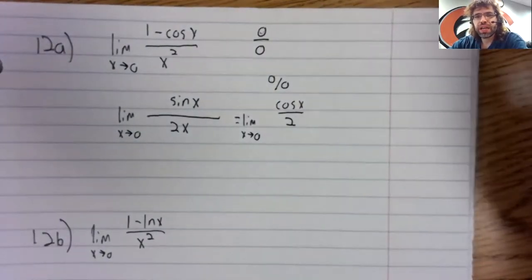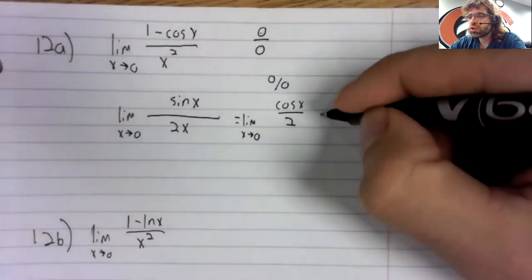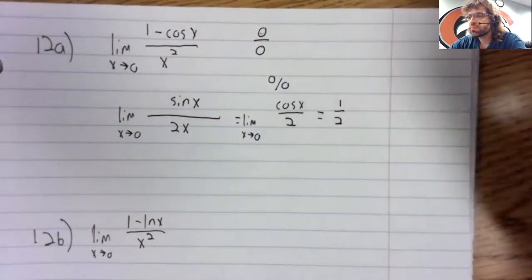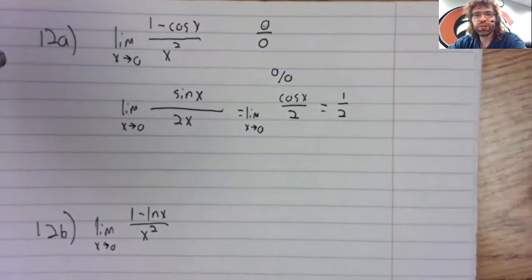But we apply L'Hopital's rule again. Now, when we let x be zero, the cosine of zero is one. And we have one over two.